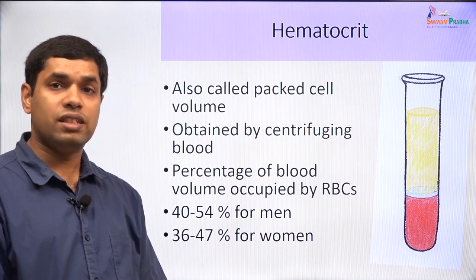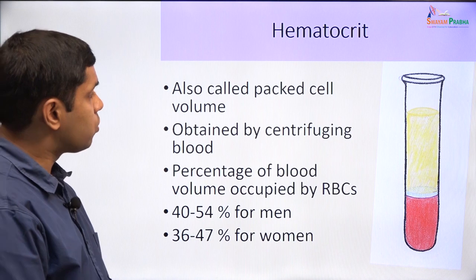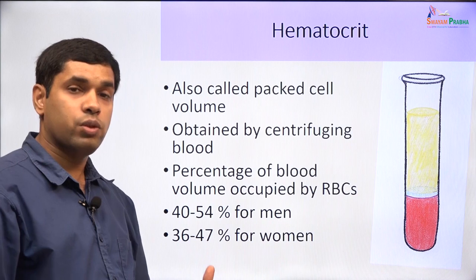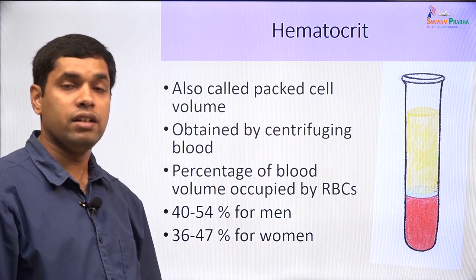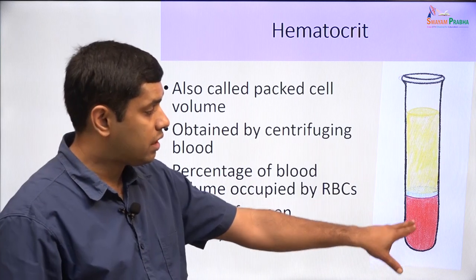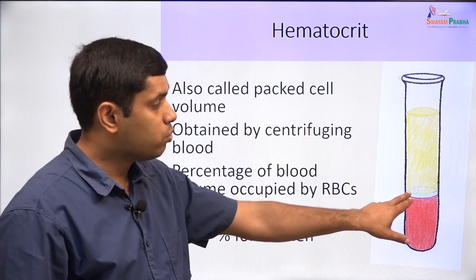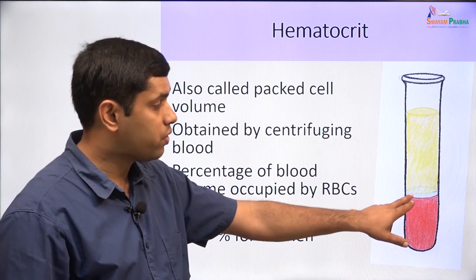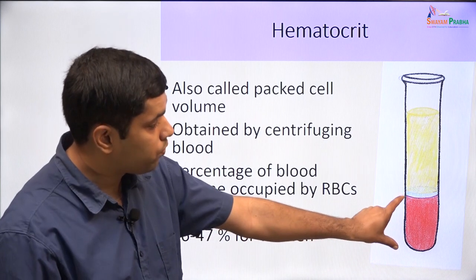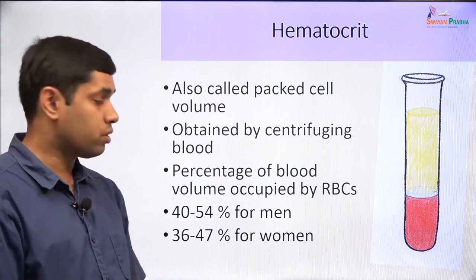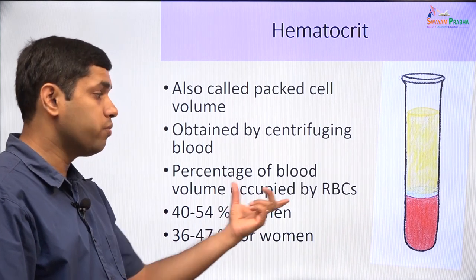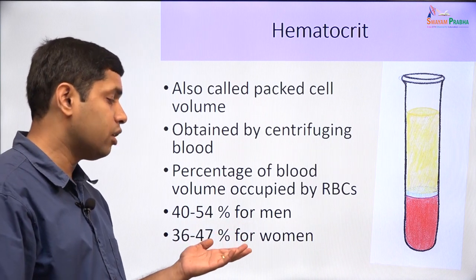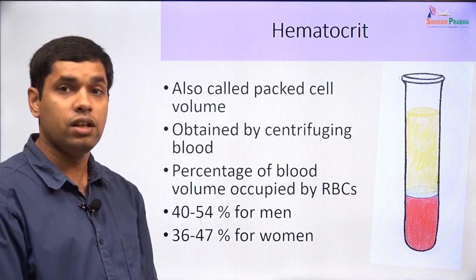At this point, we can also introduce the term hematocrit, also called the packed cell volume. We take whole blood and if we centrifuge it at a high RPM, the RBCs will settle down and above the RBCs you will see the buffy coat, which contains the WBCs and platelets, but that is a very small volume. This volume of red blood cells as a percentage of blood volume is called the hematocrit — about 40 to 54% for men and about 36 to 47% for women.